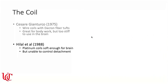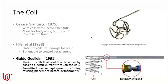Over time, platinum coils became soft enough to use in the brain, but initially their detachment could not be controlled. Dr. Guglielmi developed a platinum coil that could be detached by passing electric current through it. This permitted deployment and revision of coil placement before actually detaching it — if a loop was hanging out, you could pull it back and reposition until the placement was perfect, then release with the electrical current. Previously, coils were pushed out through the catheter and wherever they landed, they stayed. This was a revolutionary development in the treatment of brain aneurysms.